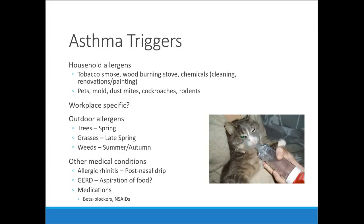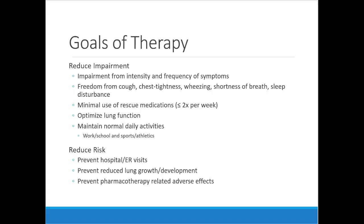Triggers for asthma include allergens, workplace industrial toxins, outdoor allergens, medical conditions like allergic rhinitis with post-nasal drip, GERD — theoretically from aspirating small amounts of food causing chronic inflammation — and medications such as non-selective beta blockers, which we discussed in the blood pressure lecture. Non-selective beta blockers can block receptors and trigger bronchospasm. Goals of therapy are to reduce impairment, minimize rescue medication use, and maintain normal activities.